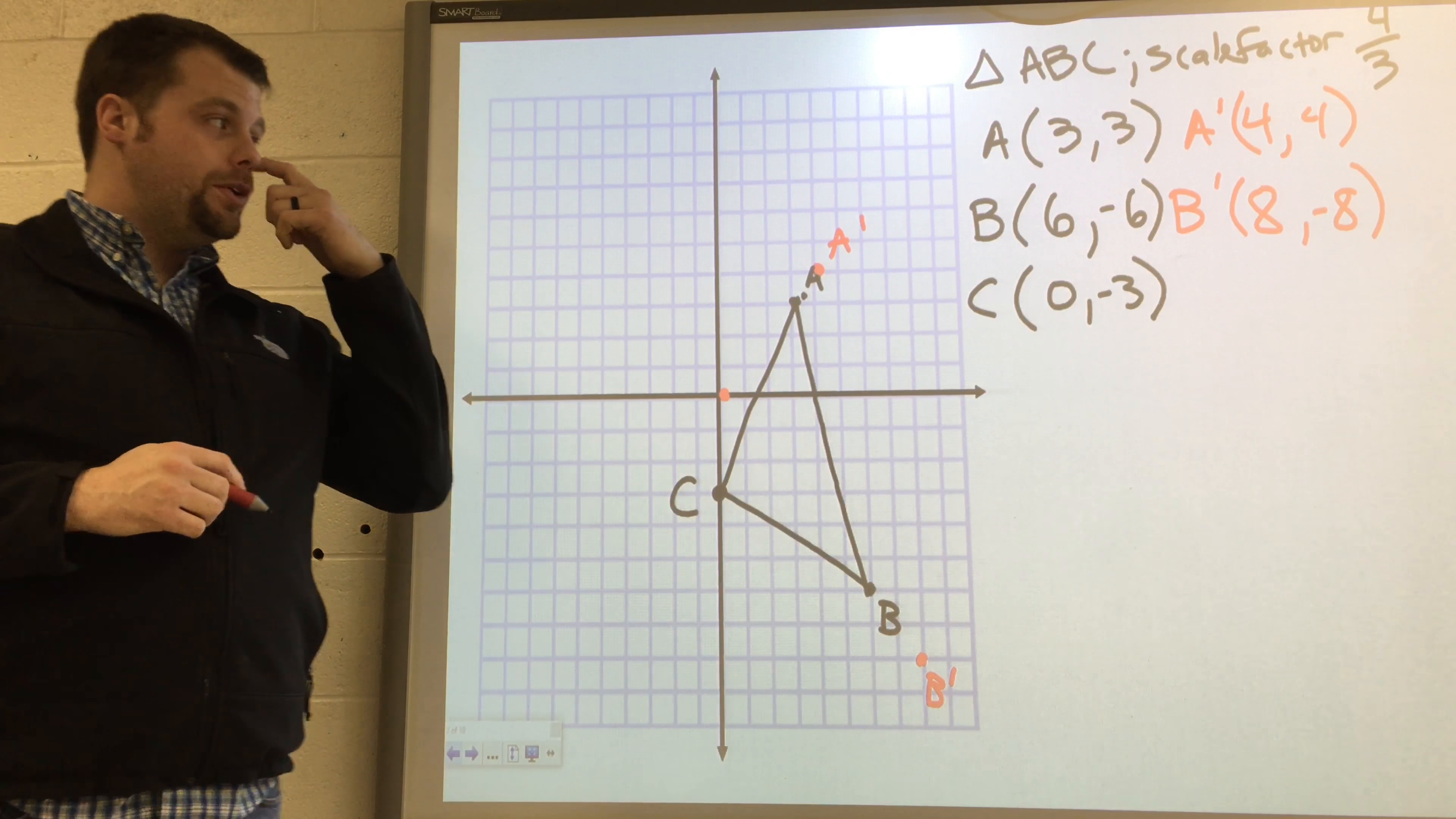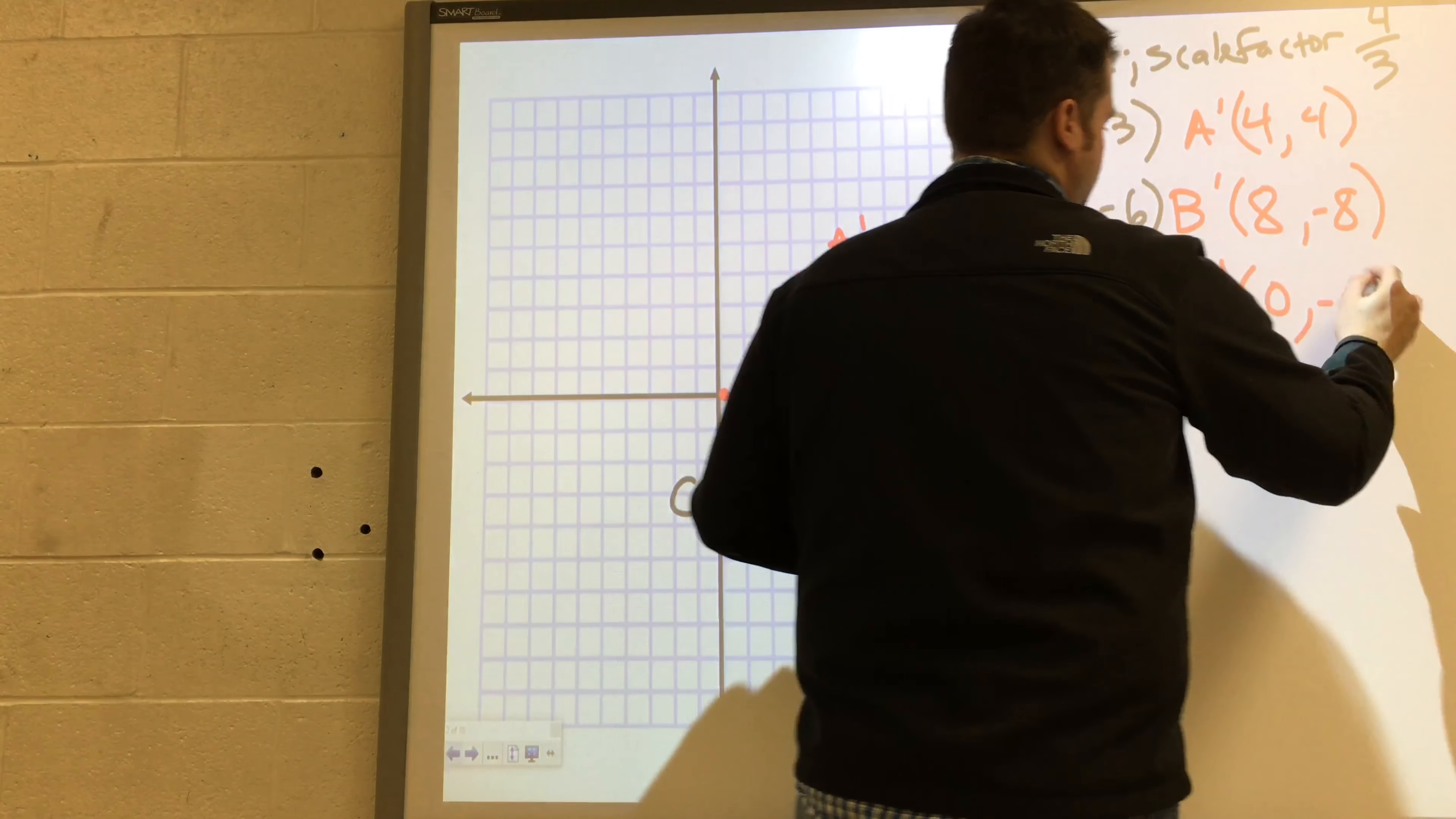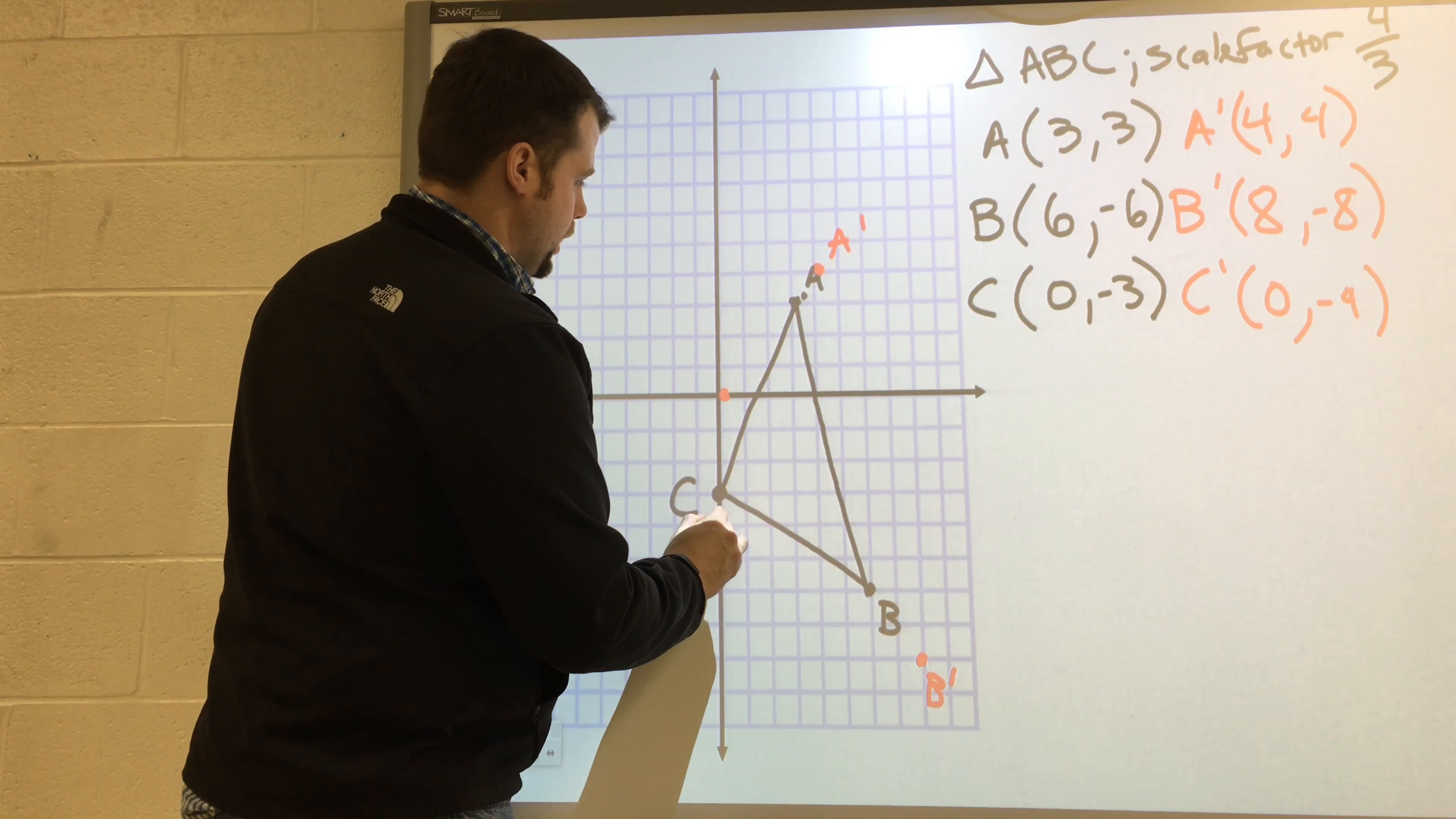And then finally we have zero, negative three. And I'm going to multiply that by four-thirds. Zero times four-thirds, just zero. Negative three times four-thirds, it's going to be negative four. So zero, negative four, right there. That's my C-prime. Connect all these here.